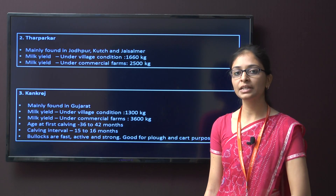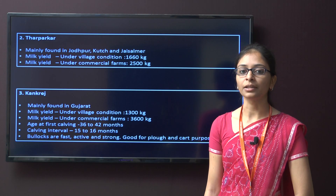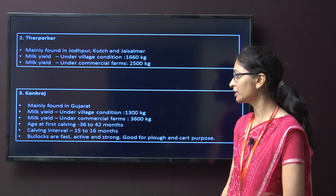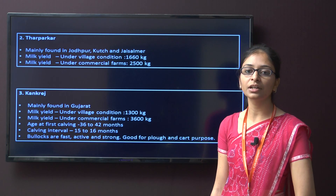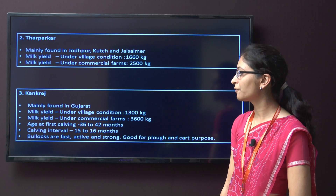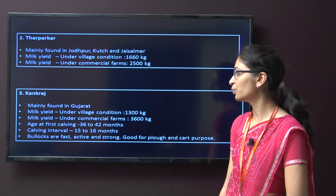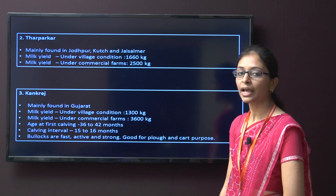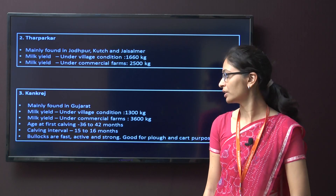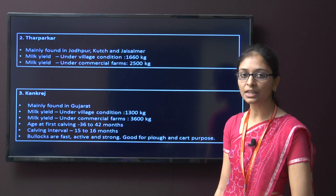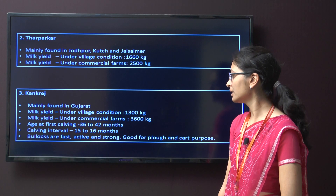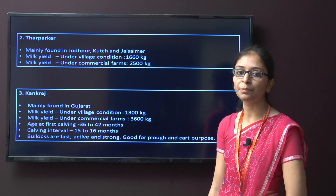The third dual purpose breed is Kankrej, mainly found in Gujarat. The milk yield under village condition is 1300 kg and under commercial condition is 3600 kg. The age at first calving is around 36 to 42 months and the calving interval is around 15 to 60 months. The bullocks of Kankrej breed are fast, active, and strong, and are good for ploughing and cart purposes.